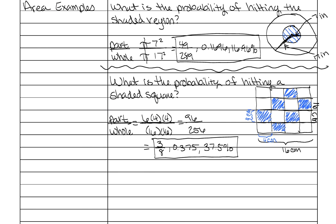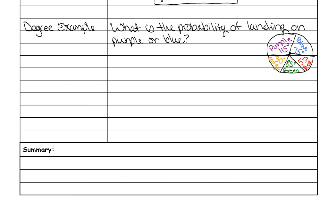Now I want to show you an example using degrees of a circle rather than the area. Here is our degree example. It says what's the probability of landing on purple or blue. And so there is a circle. You can think of it like a spinner. And so if I were to spin it, what's the probability that it would land on either purple or blue? So set up your part over whole. What is the part of the circle I'm looking at? Well I'm looking at purple or blue. So 115 plus 75 over the entire circle, which we know the degree of a whole circle is 360.